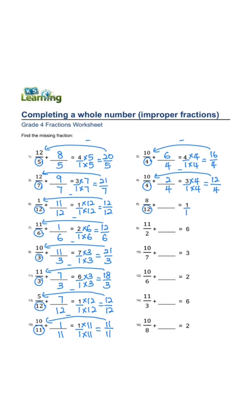denominator is 12. 1 times 12, 1 times 12 equals 12 over 12. 12 minus 8 is 4 over 12.